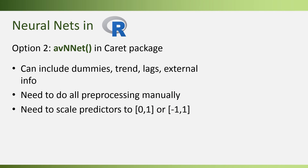Another option in R is the AVNnet function from the caret package. This is a slightly more complicated option but allows you to include much more information — dummies, trends, lags, and external information. The price is that you have to do all the preprocessing manually yourself, including scaling numerical values to the range of 0 to 1 or negative 1 to 1.